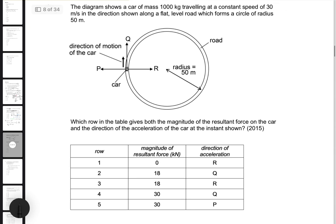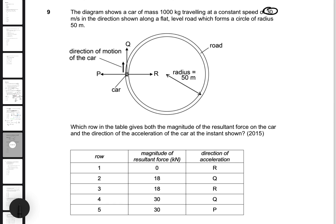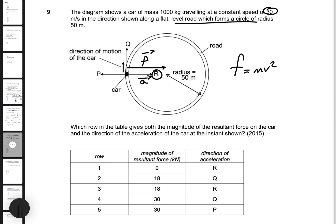Question nine is about centripetal force. A car of mass 1,000 kilograms travels at a constant speed of 30 meters per second on a level road forming a circle of radius 50 meters. The centripetal acceleration always acts in the same direction as the centripetal force — toward the center of the circle. To find the centripetal force, use F equals mv squared over R.